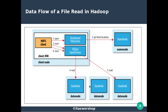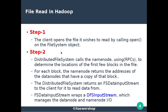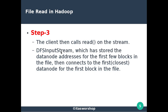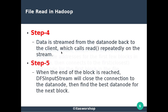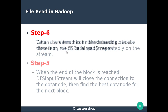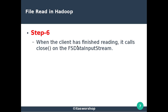Since some file blocks may reside on different nodes, FSDataInputStream first contacts the DataNode address retrieved from the NameNode, reads those blocks, then connects to the best DataNode where the remaining blocks reside. In the sixth step, after reading all data blocks from the first and subsequent DataNodes, the client calls close() on the FSDataInputStream.